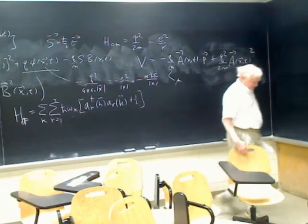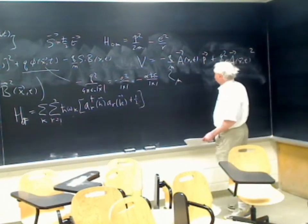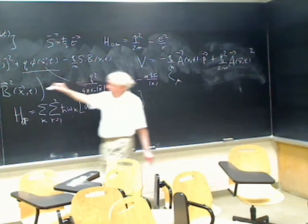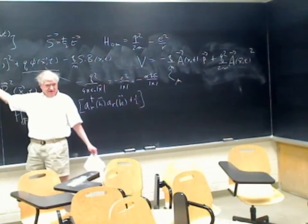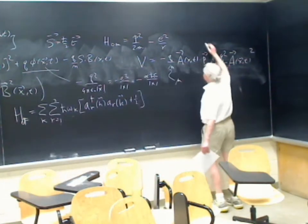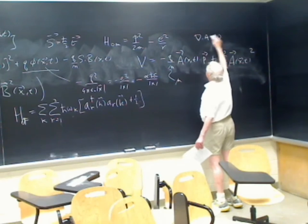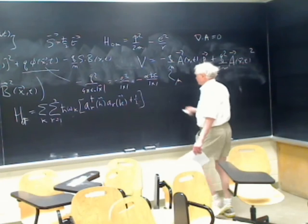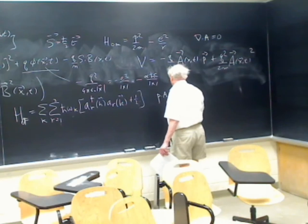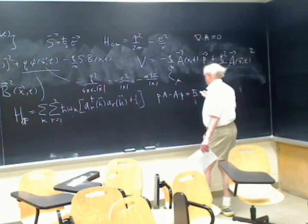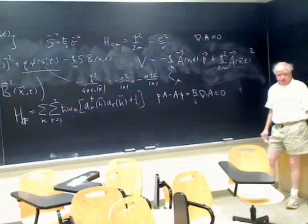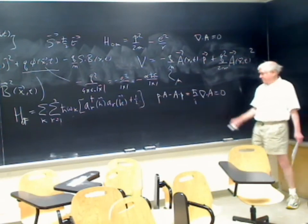Another nice feature of the Coulomb gauge: when you expand (p − qA)², you get a cross term p·A + A·p. But since ∇·A = 0, we have p·A − A·p = (ħ/i)∇·A = 0, so p and A commute. You can therefore write the interaction simply as −(q/m) A·p with no ordering ambiguity.